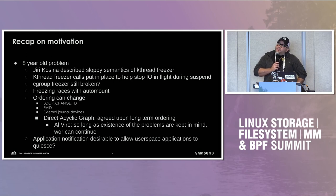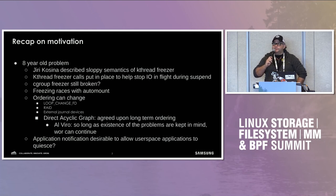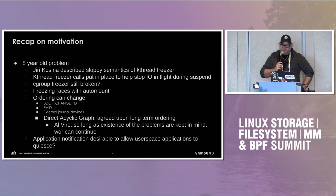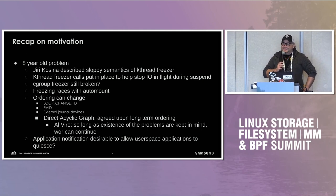A while ago, maybe about three years ago, we discussed some of these patches and a few issues came up. One was that cgroup freezing was broken. Is it still broken? No, it's fixed. What did you do? It took a new file system. Oh wow, OK, look at that — a new file system fixed it. Great.